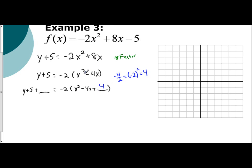However, on the left side we need to take into account that we're not actually adding 4. On the right side, we're taking negative 2 times 4 — if we were to distribute, we're really subtracting 8. And so negative 8 has to go on the left side.